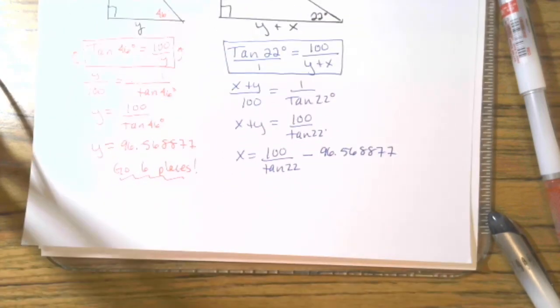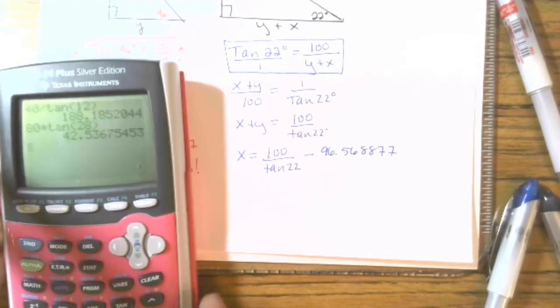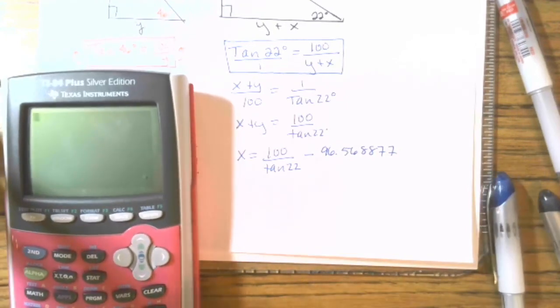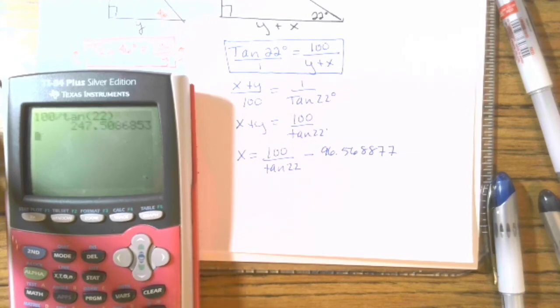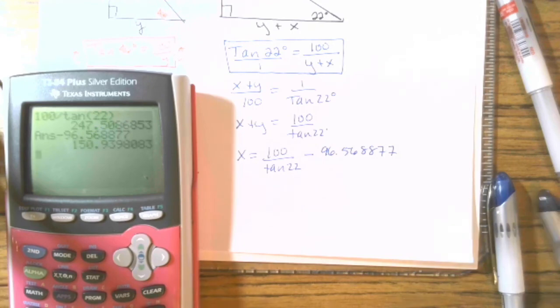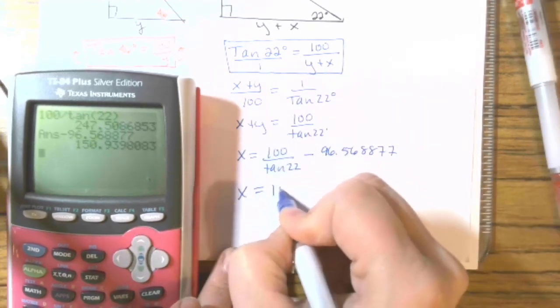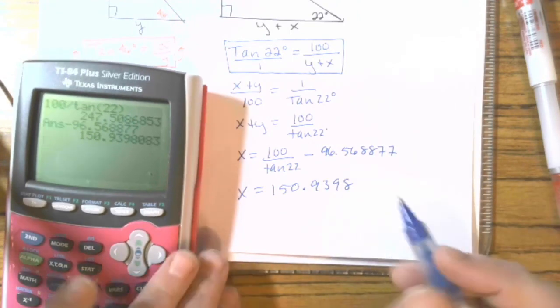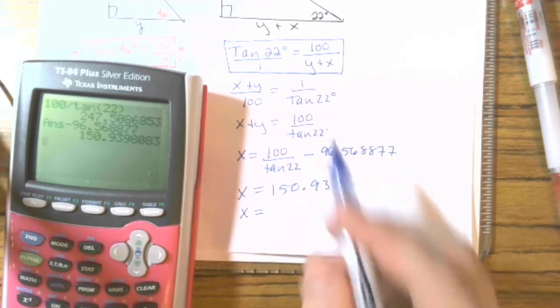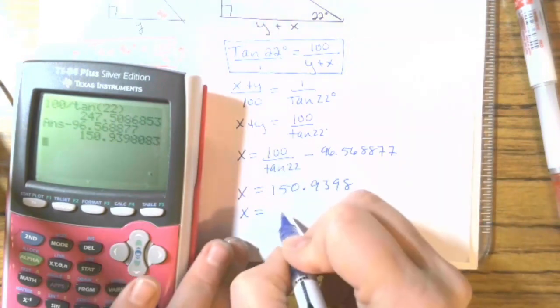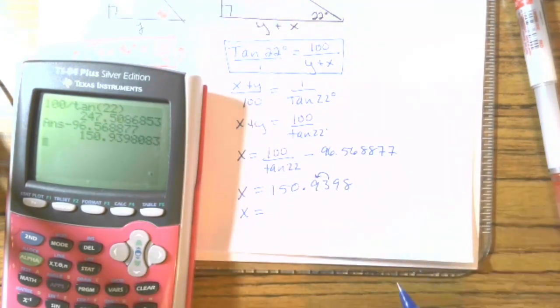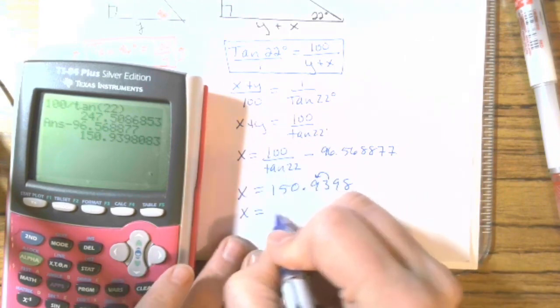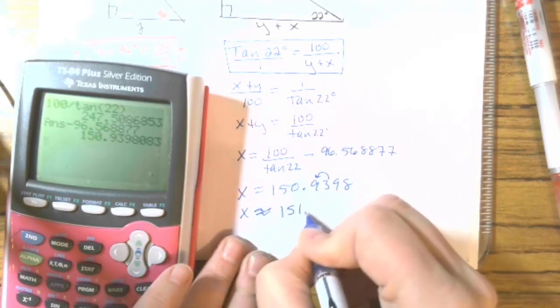All right. So, we're going to use a calculator. We're going to do this one first, and then we're going to subtract that one. So, I'm in degrees already. So, 100 divided by tangent of 22. Close the 22. Enter. Minus, and here's your decimal, 96.568877. You get X equals 150.9398. Again, it's probably appropriate because we're talking feet because the building height was in feet. Everything's in feet. So, three rounds the nine up to 10. So, we end up with, when we round, 151.0 feet. And, that would be your answer.